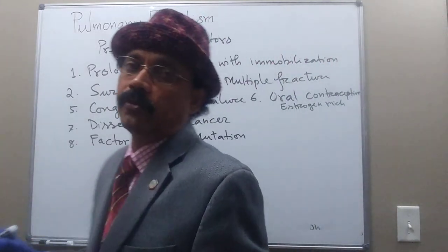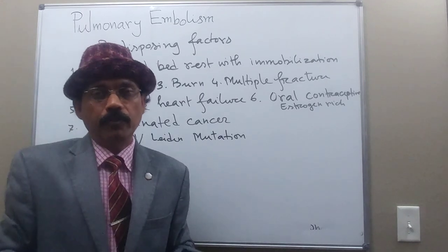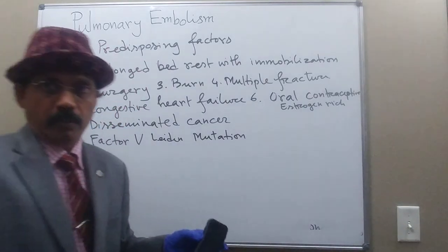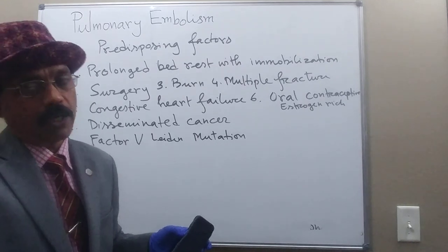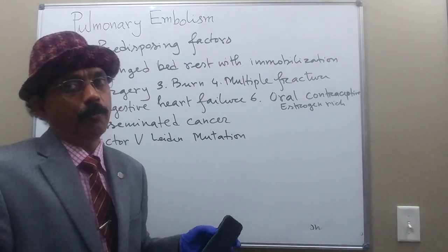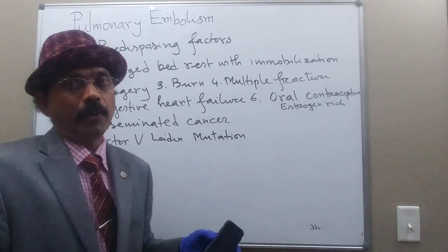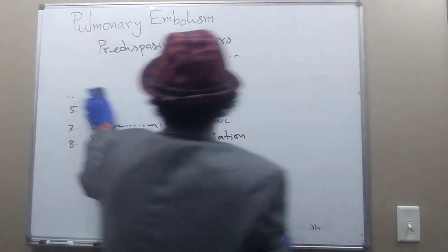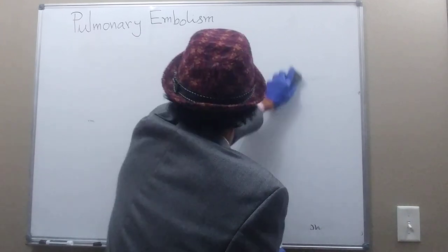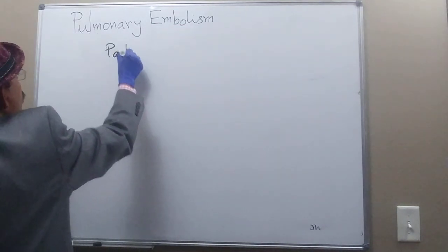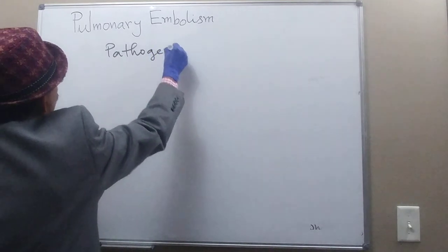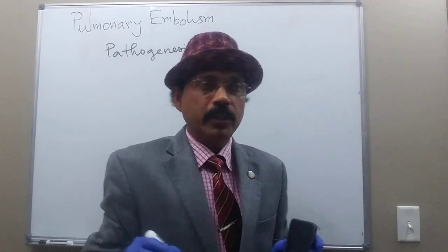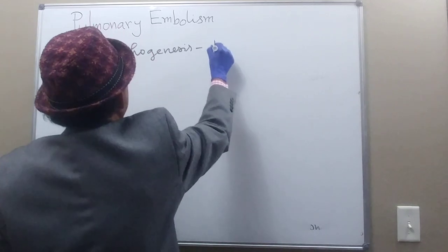Again, the thrombus originates inside the muscles of the leg or possibly in the pelvis, goes to the inferior vena cava, right atrium, right ventricle, pulmonary trunk, and branches of the pulmonary artery. Now, what is the pathogenesis of pulmonary embolism?